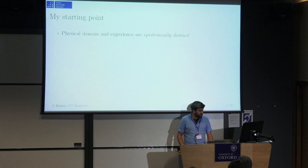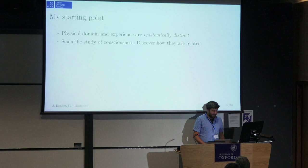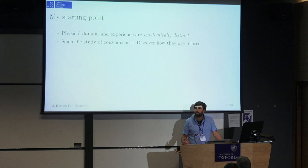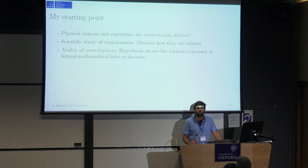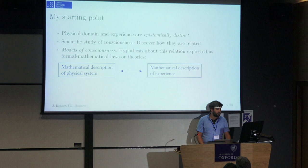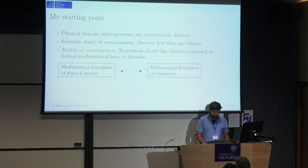The starting point of my talk is the following: I take the physical domain and experience to be epistemically distinct — two things where a priori we have a different sort of way of accessing them. The scientific study of consciousness is really about discovering how these two epistemically distinct domains are related. Models of consciousness, for the purpose of this talk, are hypotheses about these relations expressed in formal mathematical terms — basically formal laws or theories about how nature could relate these things. They take a mathematical description of a physical system and relate that, as a bridging law or maybe as a unified theory, to a mathematical description of experience.